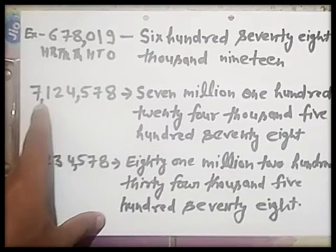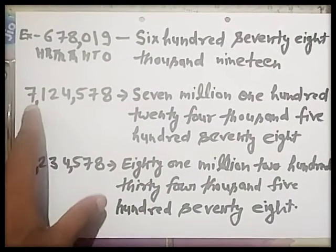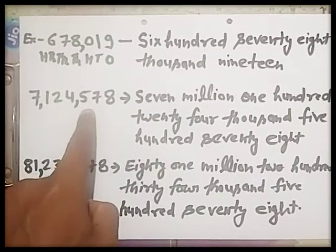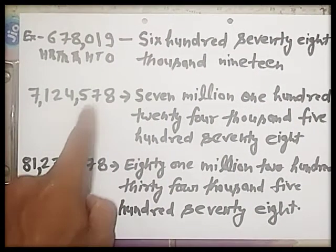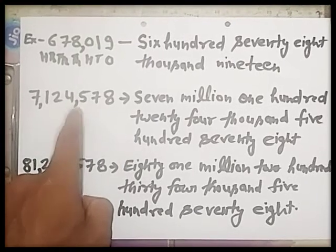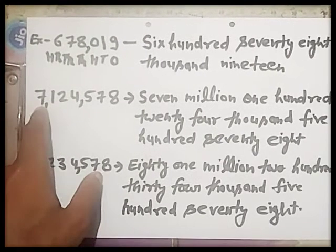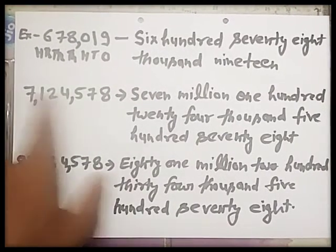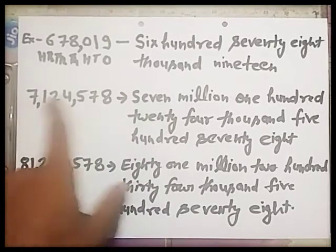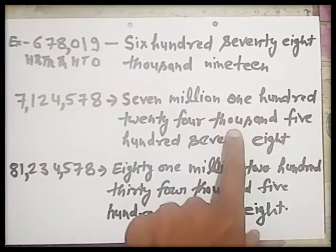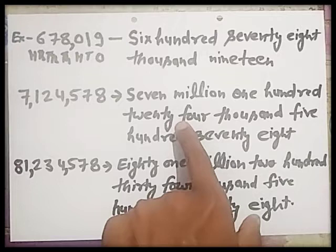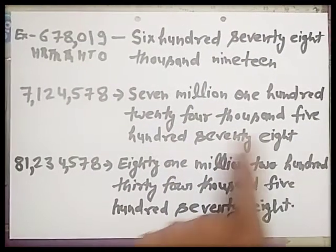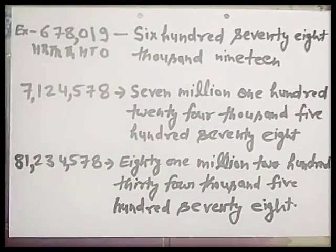Next example: 7,124,578. Put a comma after every 3 digits from right to left: 1, 2, 3 — comma; then 1, 2, 3 — comma; then 1, 2, 3. This means the digit 7 is in the millions place. So it is 7,000,000 — 124,000 — 578. Written as 7,124,578.